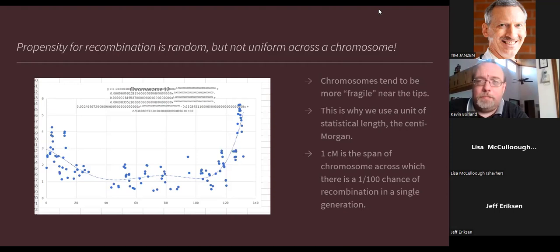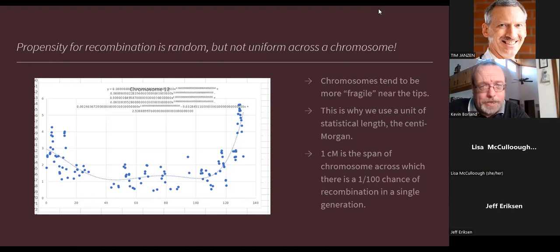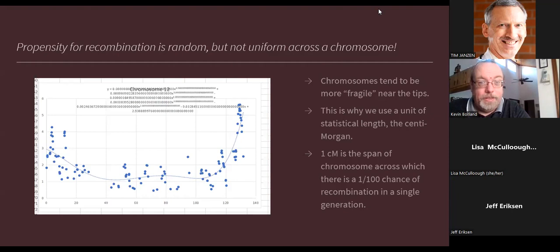A centimorgan is the amount of chromosome across which, statistically, there is a 1-in-100 chance of recombination per generation. Borland Genetics uses a polynomial equation as a curve of best fit for centimorgan calculations rather than a lookup chart. Lookup charts are more accurate with more data points, but the polynomial equation is fast enough for meaningful calculations and allows making raw DNA tools on a lower budget.